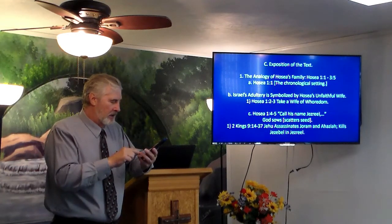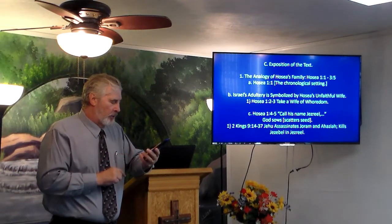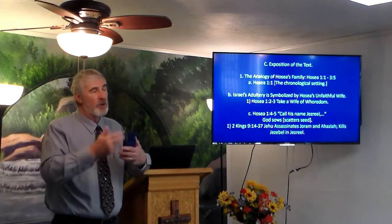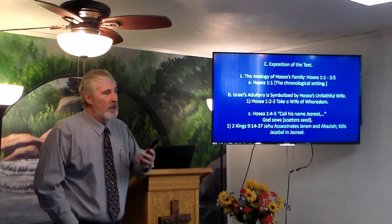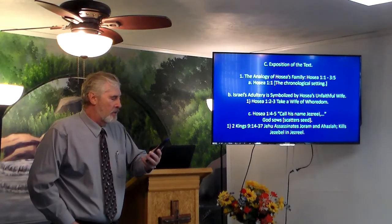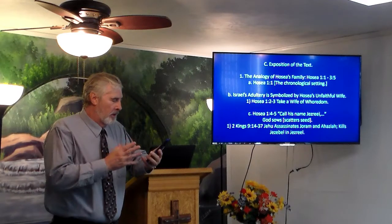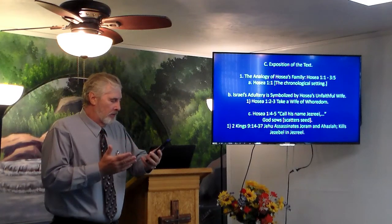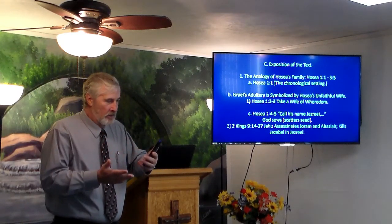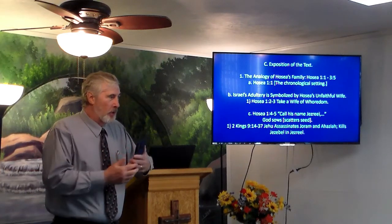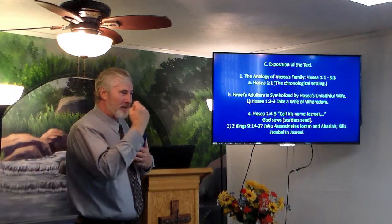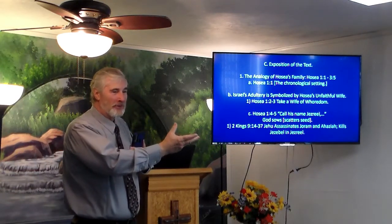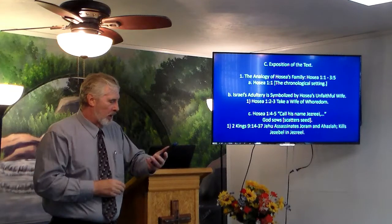Verse 14: Jehu the son of Jehoshaphat, the son of Nimshi, conspired against Joram. What happens when Ahab the evil king is killed? Then Joram his son takes over. But Jehu was anointed king — he's got to finish off the house of Ahab. Now Joram, with all Israel, had been on guard at Gilead against Hazael king of Syria. But Joram had returned to be healed in Jezreel of the wounds the Syrians had given him.